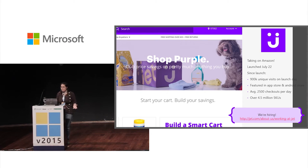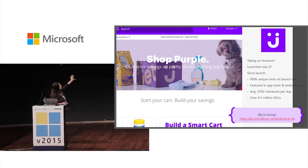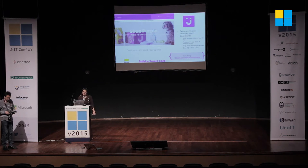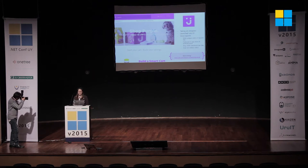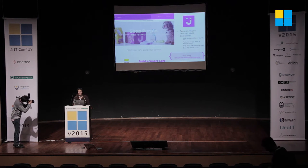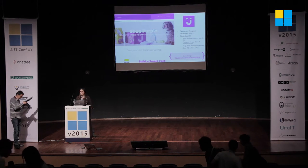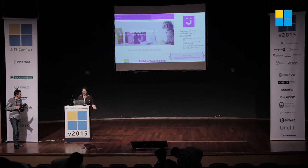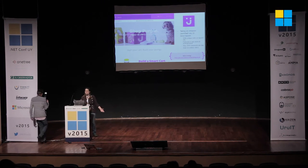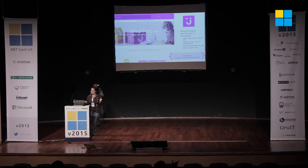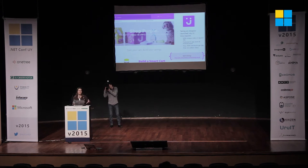I work at Jet.com. We use a lot of services — we have a microservice architecture with about 300 of them. We launched in July and are taking on Amazon as an e-commerce site, so far just in the US but eventually the world. We have about four and a half million products on our website, featured in the Android and iOS app stores, and had 900,000 visits on launch day. So we have a pretty serious architecture, just so you know that what I'm showing you today has actually been real-world tested.